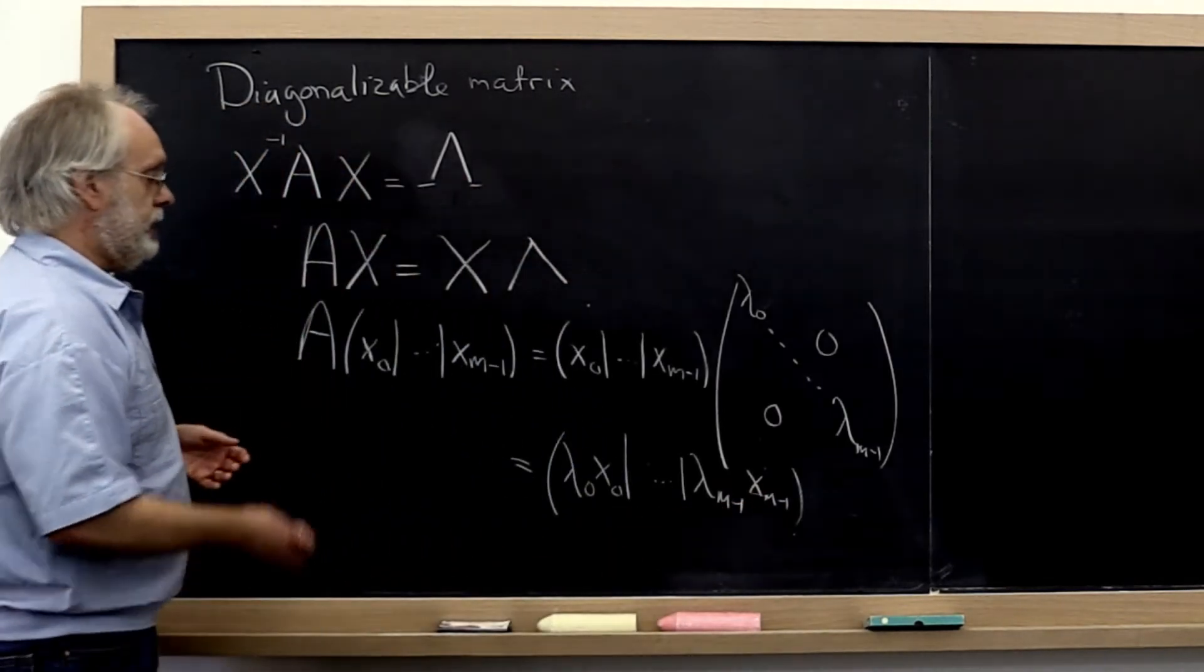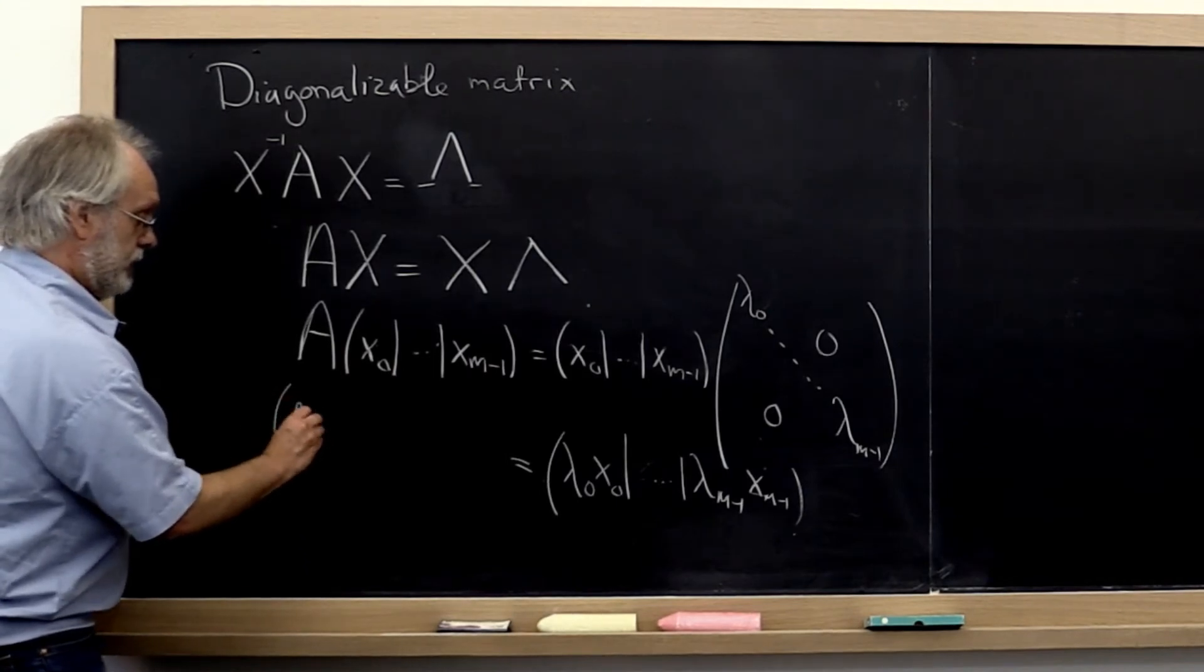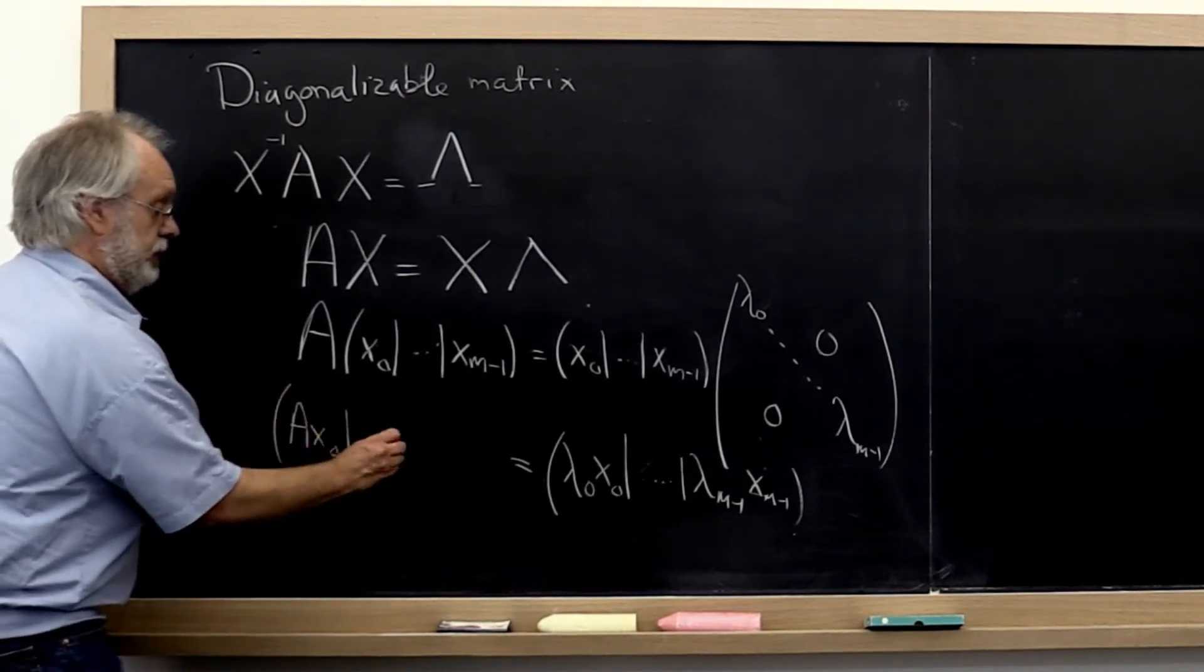On the left, we know that multiplying a matrix times the partitioned columns just means multiplying that matrix times the individual columns.